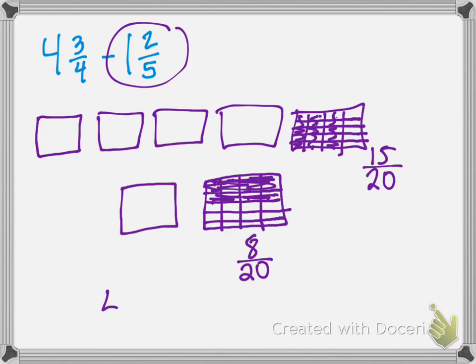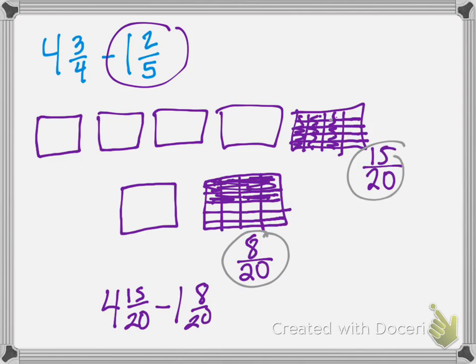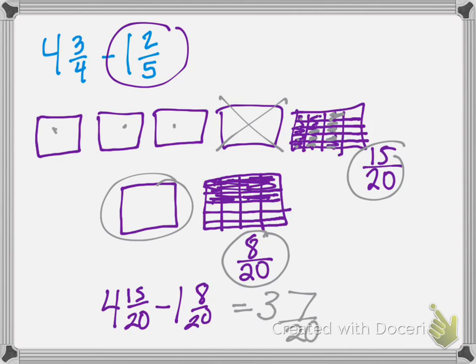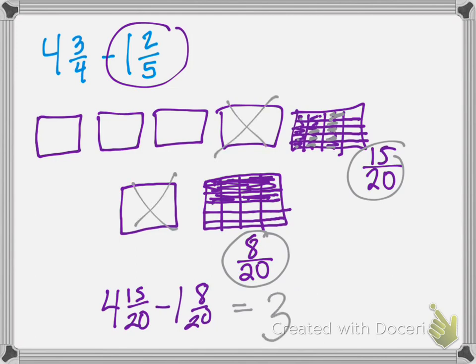So we have 4 and 15 twentieths minus 1 and 8 twentieths. We want to take away 8 twentieths from our 15 twentieths, so we get rid of 8 of those — 1 through 8. We have 7 left. But we also need to take 1 whole away, so now we have 3 wholes left. That gives us 3 and 7 twentieths.